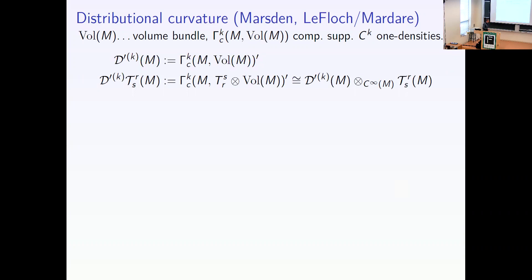Here is the distributional framework — this is classical, done by Geroch and Traschen long ago, and also put in a very nice form by LeFloch and Mardare more recently. We look at distributions on manifolds: you take the volume bundle on a manifold, look at smooth sections of that volume bundle, allowing certain finite differentiability — for k equals one, which will be our framework — and the space of distributions is the dual of these smooth compactly supported sections.